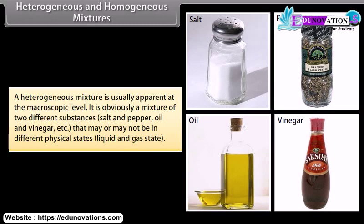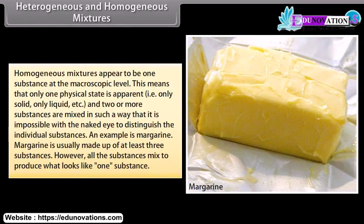Heterogeneous mixtures may or may not be in different physical states, such as liquid and gas. Homogeneous mixtures appear to be one substance at the macroscopic level, meaning only one physical state is apparent. Two or more substances are mixed in such a way that it is impossible with the naked eye to distinguish the individual substances. An example is margarine, which is usually made up of at least three substances; however, all the substances mix to produce what looks like one substance.